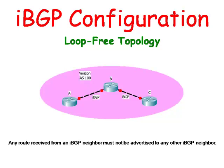According to the rules of IBGP in a single autonomous system, if router A advertises a route to router B, router B cannot then advertise that same route to router C. But router A can directly advertise that route to router C.